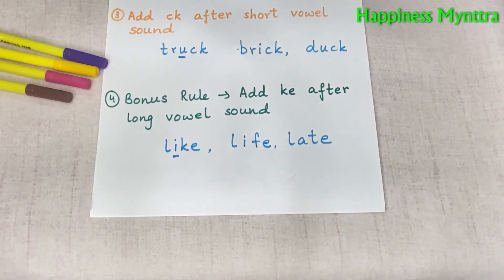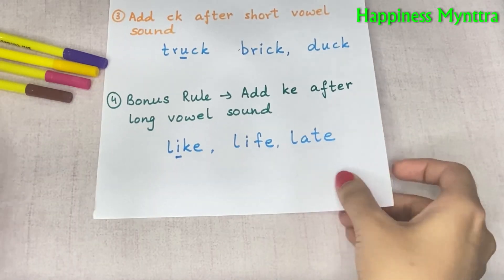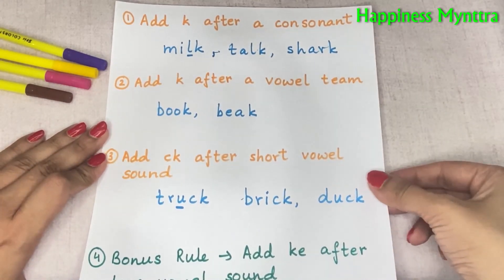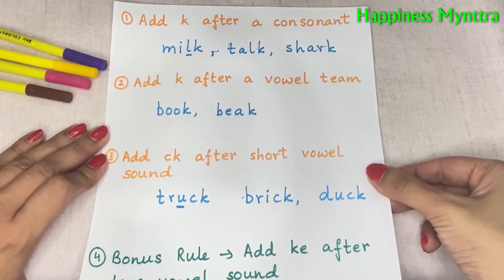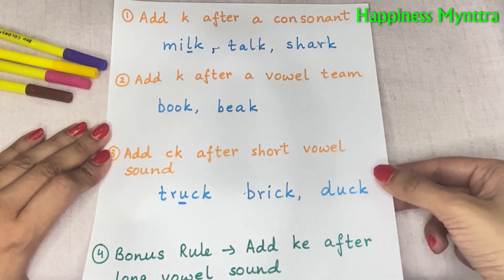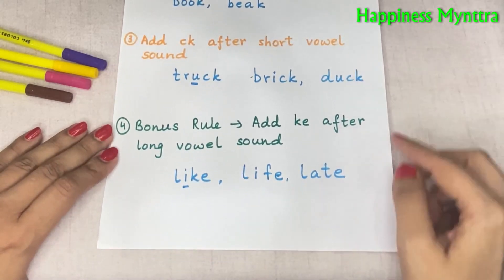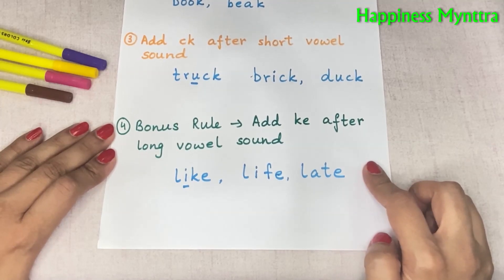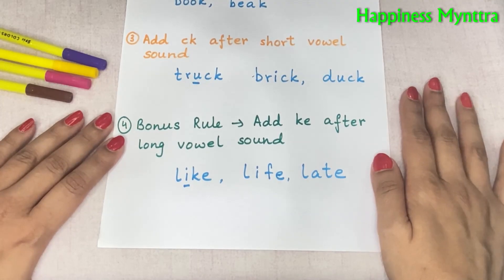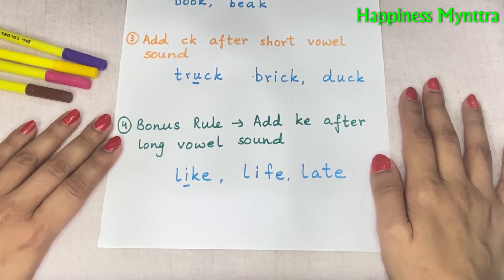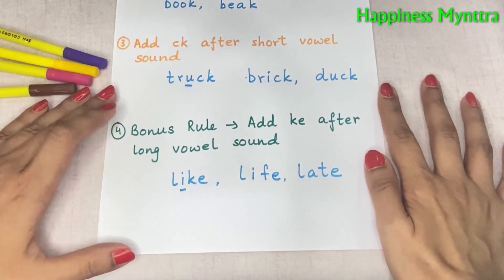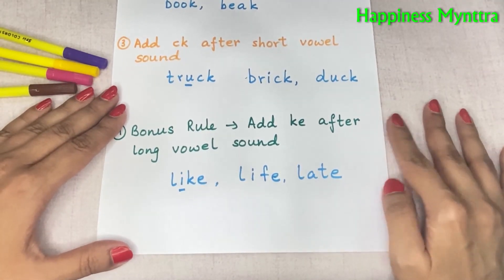This is basically the milk truck rule — very simple, very easy. There are four things to remember so you know whether to add K, CK, or KE when you hear the K sound. KE is also part of the magic E concept. I have another video on my channel explaining the entire concept of K sounds — C, K, KE — how to begin and end with these K sounds. Do check out that video. Thank you!